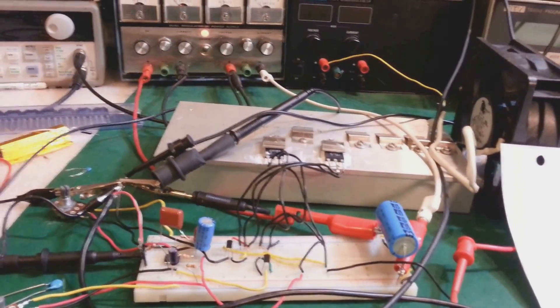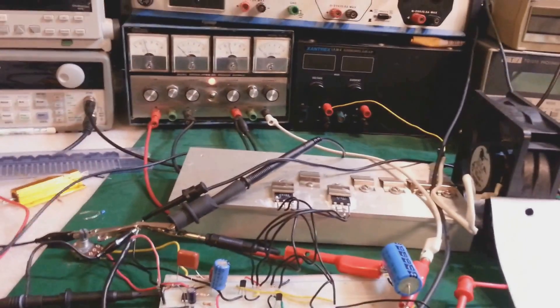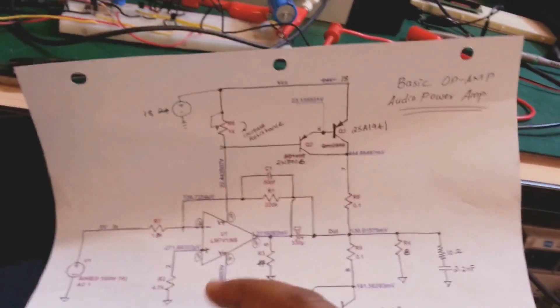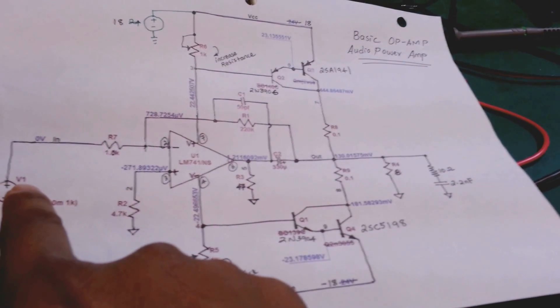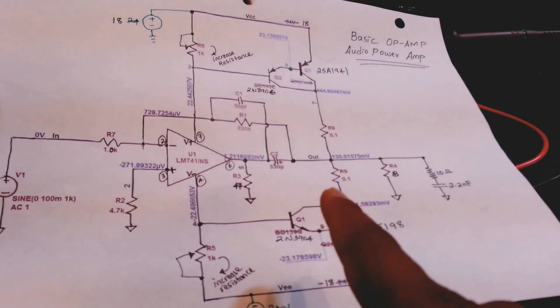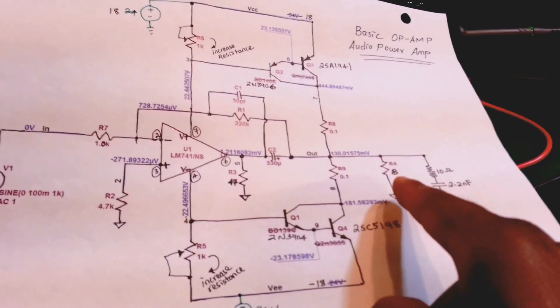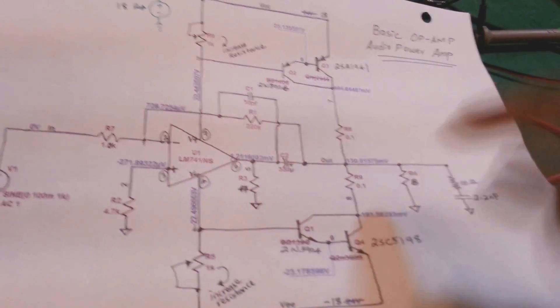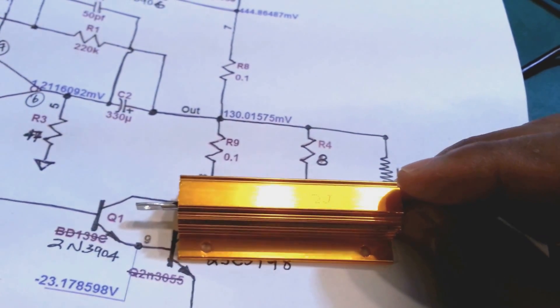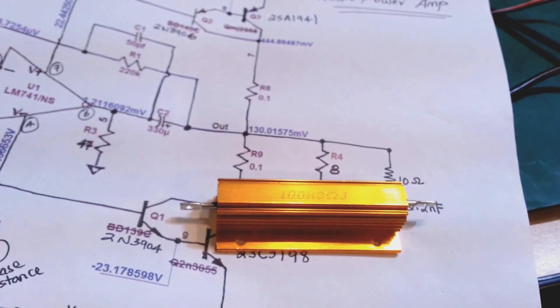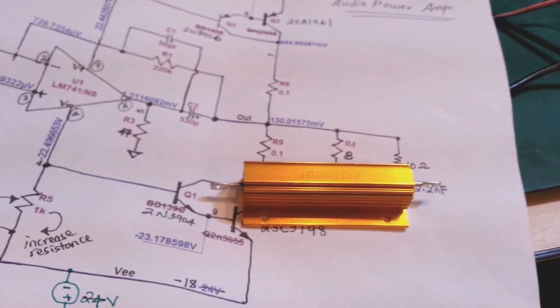So what we'll do next is we'll inject some signal, some sine wave into the input right here into the input, and we'll do some load calculation. And I'll replace the speaker with a dummy load, an eight ohm dummy load, which I have, yeah, right here. I have an eight ohm hundred watt dummy load here, and I'll put that, and then I'll try to measure the output.